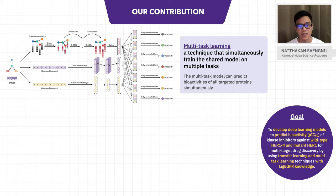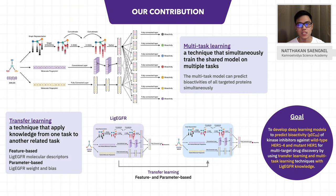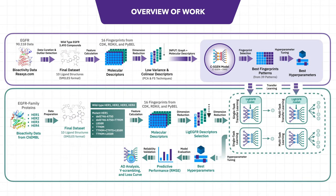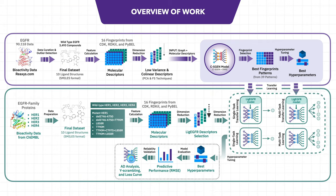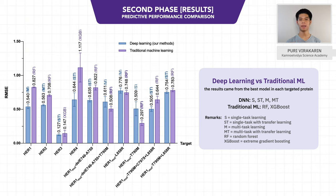Multi-target learning is a technique that trains the model with all targeted proteins simultaneously, and transfer learning is a technique that transfers LIC-EGFR knowledge to new models. For our procedures, we download bioactivity data from the ChEMBL database, then convert SMILES into fingerprints the same as the LIC-EGFR model. After we have all the data, we create the models with four combinations: single-target learning, single-target learning with transfer learning, multi-target learning, and multi-target learning with transfer learning. Lastly, we compare their performances with traditional machine learning methods, which are random forest and extreme gradient boosting.